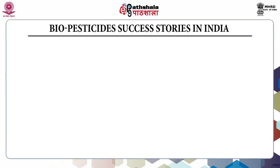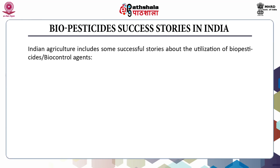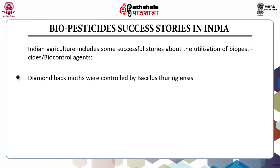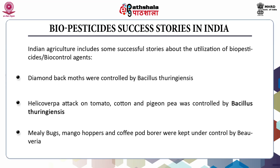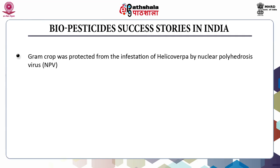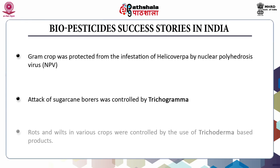Now we will discuss some success stories related to biopesticides in India. Indian agriculture includes some successful stories about the utilization of biopesticides or biocontrol agents. Diamond back moths were controlled by Bacillus thuringiensis. Helicoverpa attack on tomato, cotton and pigeon pea was controlled by Bacillus thuringiensis. Mealybugs, mango hoppers and coffee pod borer were kept under control by Beauveria. Gram crops were protected from the infestation of Helicoverpa by NPV (Nuclear Polyhedrosis Virus). Attack of sugarcane borers was controlled by Trichogramma. Rots and wilts in various crops were controlled by Trichoderma-based products.